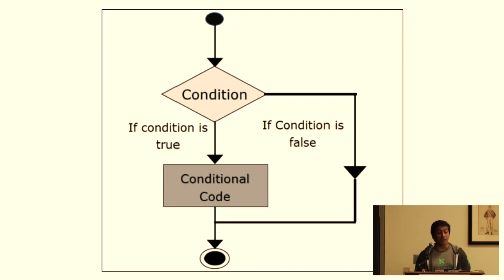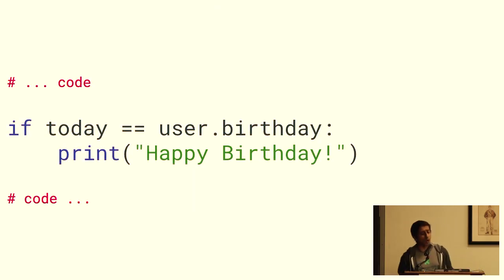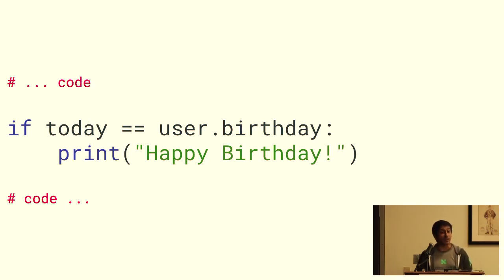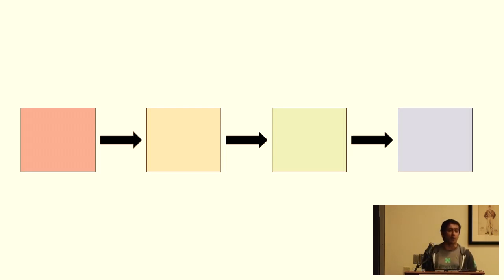So what's an if statement? If statements are elements of a programming language that allow us to control what statements are executed. If we're given a condition and it's true, we execute a block of code and continue. If that condition is false, we skip over that block and continue like nothing ever happened. By chaining together a series of if statements, we can solve any problem we can think of. This is a really powerful concept, and there's a reason if statements are one of the building blocks in most programming languages.